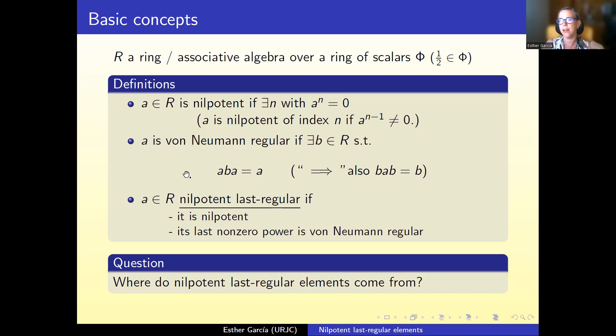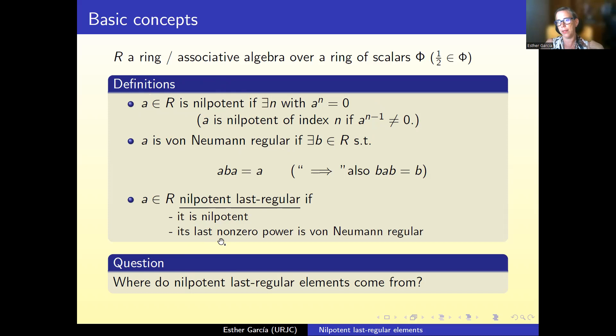We normally assume these two conditions. There exists an element B that behaves like an inner inverse — A and B are somehow inverses of each other when we don't have a unit. The notion of nilpotent plus regular — the name was given by us, so it's not classical — combines these two: an element is nilpotent plus regular if it is nilpotent and the last non-zero power of the element is von Neumann regular.